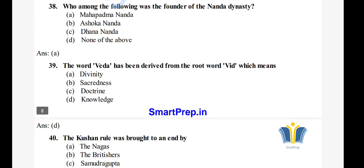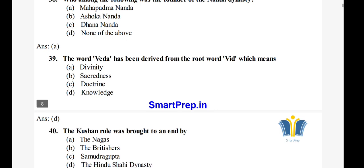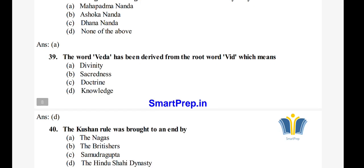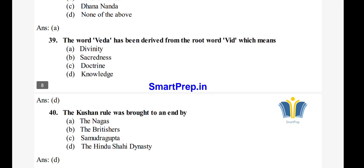Question 40: Kushan rule was brought to an end by — A) Nagas, B) Betishar, C) Samudragupta, D) Hindu Shahi dynasty. The right answer is option D, Hindu Shahi dynasty.